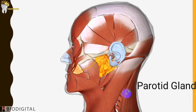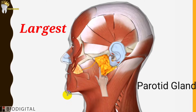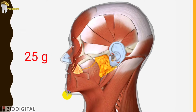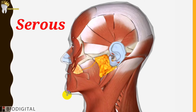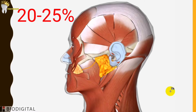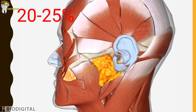This is the parotid salivary gland. Remember that this is the largest of the salivary glands with an average weight of 25 grams. The salivary secretion of this gland is completely serous — meaning thin watery secretion that contains a lot of proteins. It makes up for about 20 to 25% of the saliva formed by salivary glands.